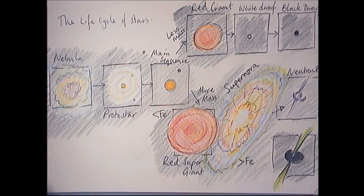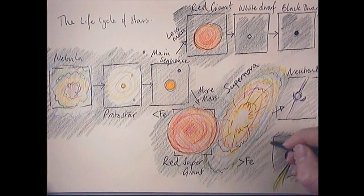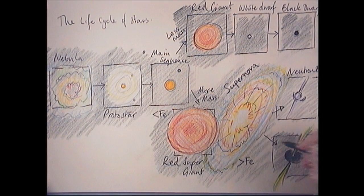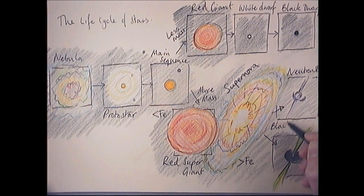A neutron star is an incredibly dense ball of neutrons. And if it's got more mass, enough mass for this, then you'll be left with what's called a black hole.